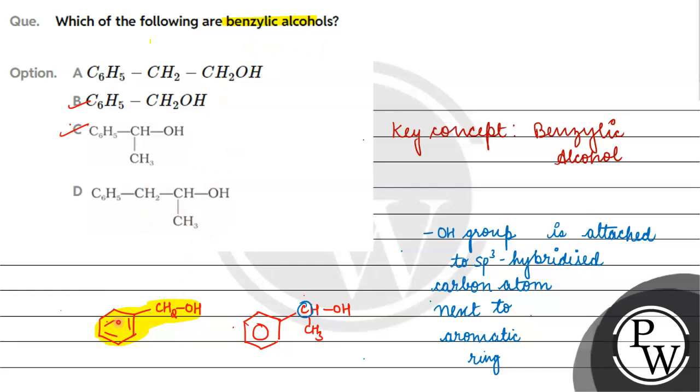To summarize benzylic alcohol: benzene ring attached to one carbon atom. This carbon should be SP3 hybridized with an OH group attached. Then we call it benzylic alcohol. I hope you understood. Thank you and all the best.